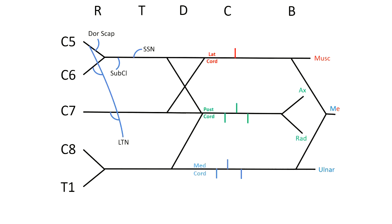Now the lateral cord gives rise to the lateral pectoral nerve and the musculocutaneous nerve as well as the lateral head of the median nerve. That's why the median nerve is in two different colors.